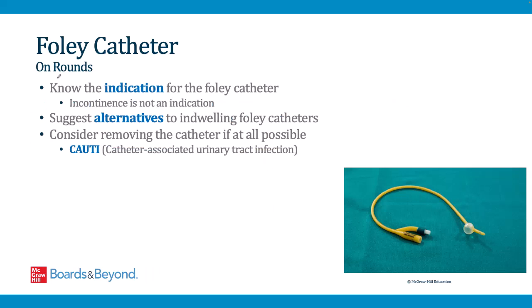On rounds, it's important to list the indication for the Foley catheter. Incontinence alone is not a true indication, and if there isn't a clear indication, an alternative should be suggested. We are aggressive about removing Foley catheters to decrease the risk of CAUTI — catheter-associated urinary tract infection. Like CLABSIs, CAUTIs are iatrogenic and hurt hospital metrics.